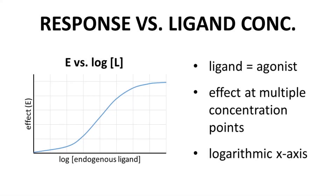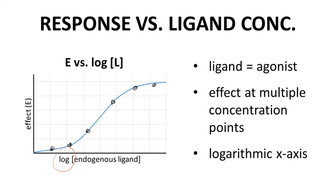On the screen we have a graph. This graph shows the effect of a ligand on a receptor against the logarithm of the ligand concentration. This particular ligand is the endogenous ligand for the receptor — a full agonist. This curve is generated from multiple concentration points. The collective points form a sigmoidal curve. Generally, when you see a sigmoidal curve like this, the x-axis will be a logarithmic axis. This kind of curve — response vs. log concentration — typically arises from in vitro assays.